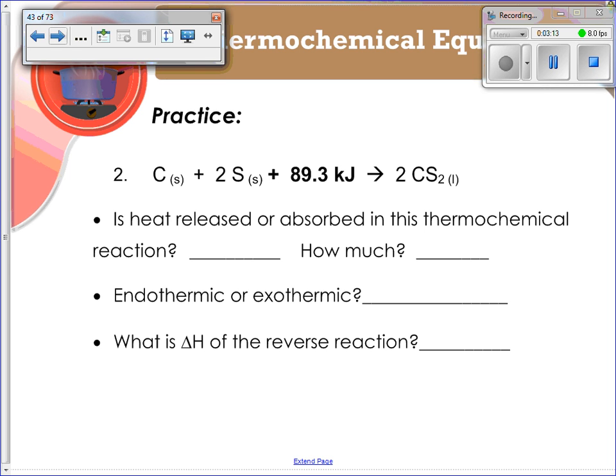So if we look at another example here, okay, we've got carbon and sulfur, and then we're adding 89.3 kilojoules as a reactant this time around. And then that's our product.